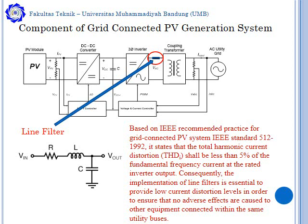The other component is the line filter. Based on IEEE recommended practice number 512, 1992, it states that the total harmonic current distortion should be less than 5% of the fundamental frequency current at the rated output. Consequently, the implementation of line filters is essential to provide lower current distortion levels in order to ensure that no adverse effects are caused to other equipment connected within the same utility bus.